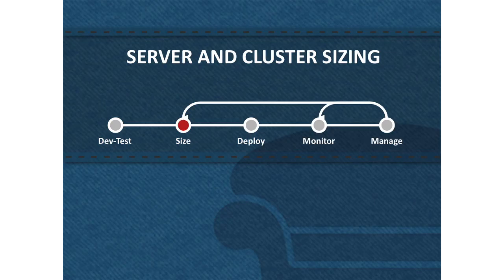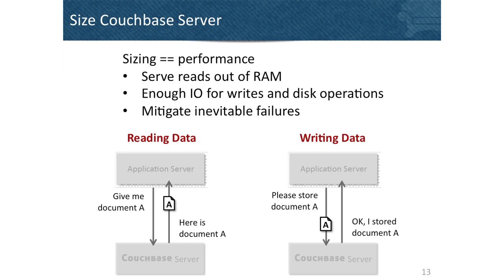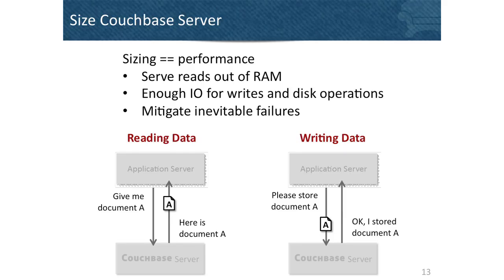Let's look at what it means to size a cluster — this is really one of the most important things to understand about deploying Couchbase in production. A properly sized cluster will perform the way you want; an undersized cluster will probably not. You want to serve the majority of reads out of RAM, because cache misses take longer to read from disk. You need enough I/O — both disk and network — for write operations, and you need to be aware of the potential for failure.